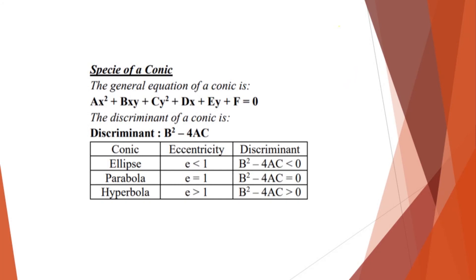Okay, so let's get started. So we will first discuss the species of a conic. So the general equation of a conic is given by this equation here, which is ax squared plus bxy plus cy squared plus dx plus ey plus f is equal to 0. So the discriminant of a conic is discriminant is equal to b squared minus 4ac.